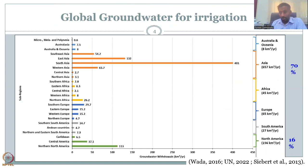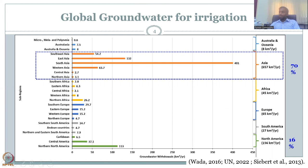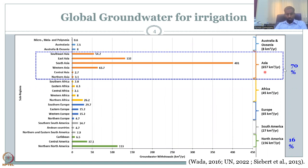Looking at global groundwater withdrawals in km³ per year, South Asia, Southeast Asia, and Western Asia consume more than 70% of global groundwater. Comparing to developed nations — Europe has only around 65 km³ per year, whereas Asia is at 657 km³ per year. South America is on a similar level to Europe, and North America is slightly higher due to agriculture like almonds and orchards in California.